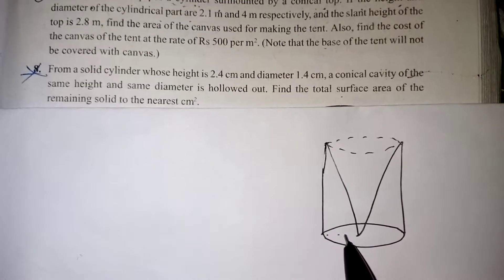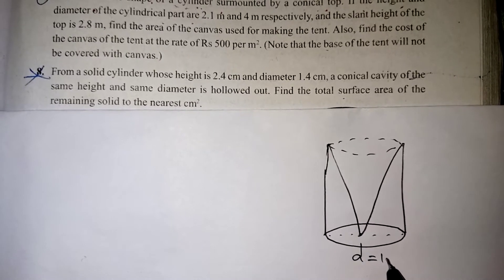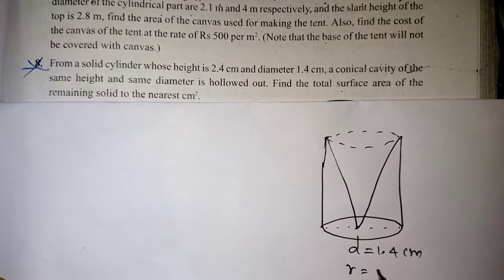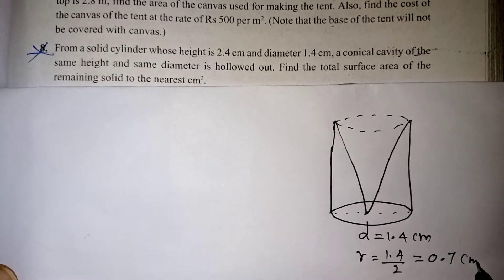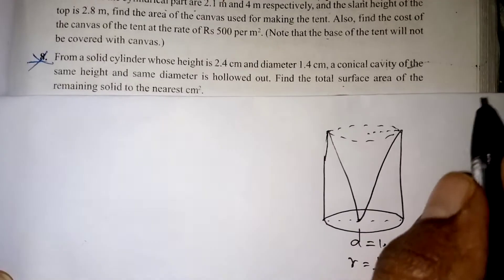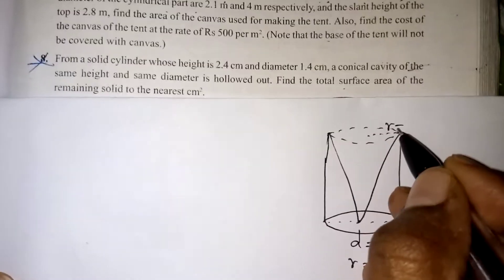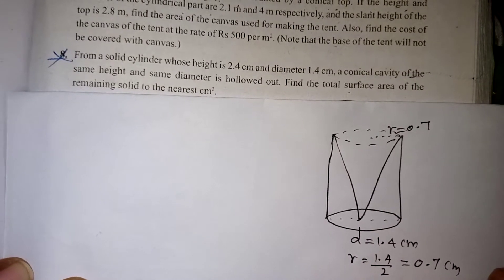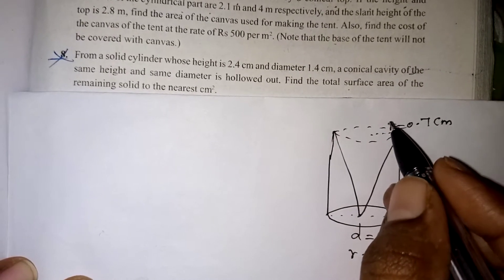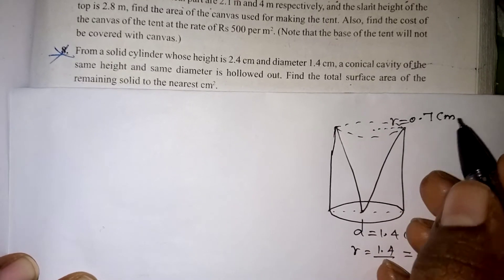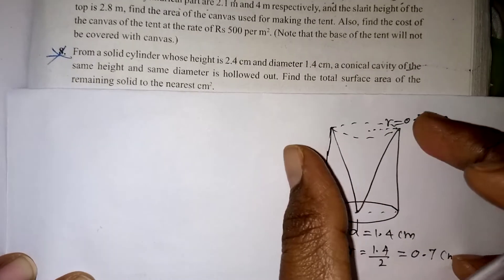The diameter is given as 1.4 cm, so the radius will be 1.4 divided by 2, which gives 0.7 cm. The radius of the cone as well as the radius of the cylinder are both 0.7 cm. The question asks us to find the total surface area of the remaining solid to the nearest cm squared — that is, after taking the cone outside, what is the remaining solid's surface area.